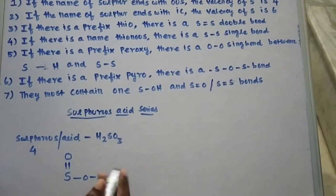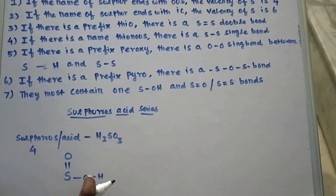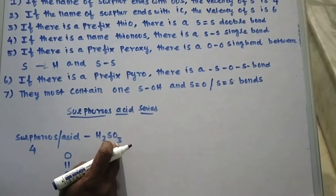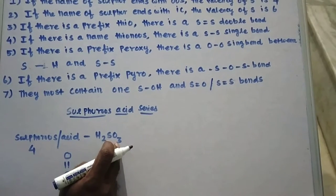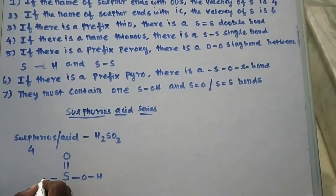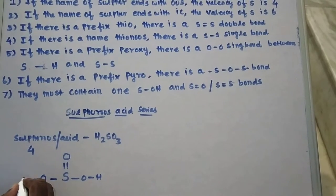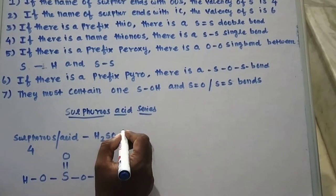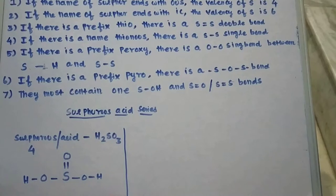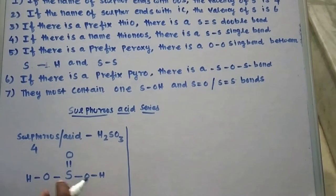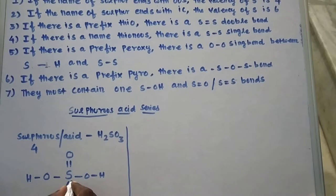The remaining two oxygens are fitted into the formula. There is one oxygen and one hydrogen remaining, so it becomes another OH group. This gives the complete structure of sulfurous acid, which also has a lone pair of electrons on sulfur.